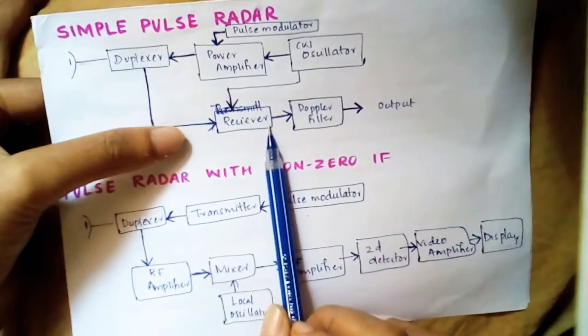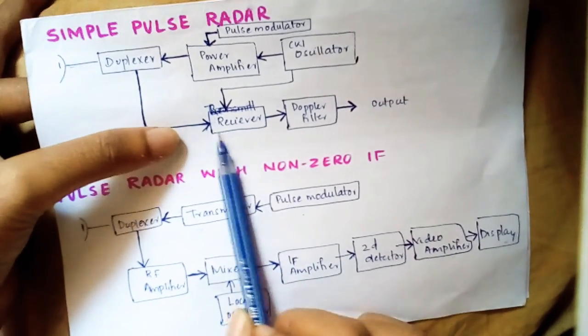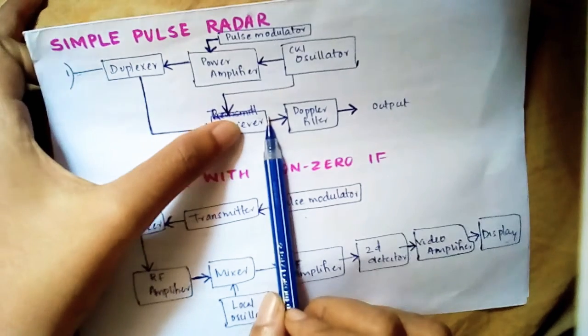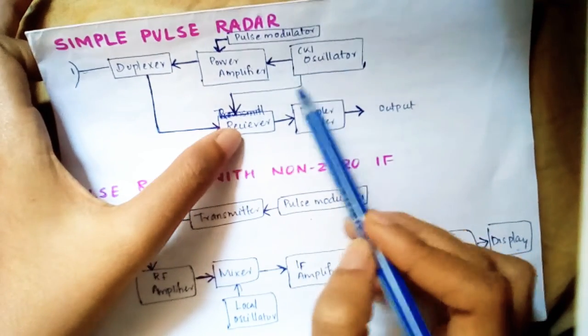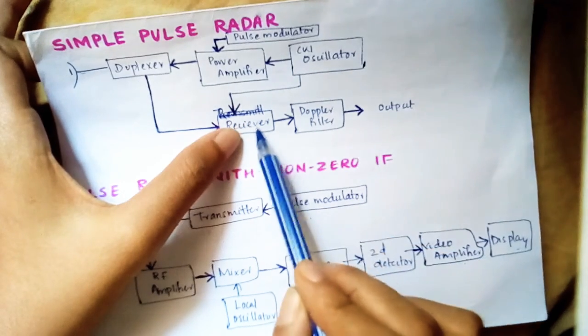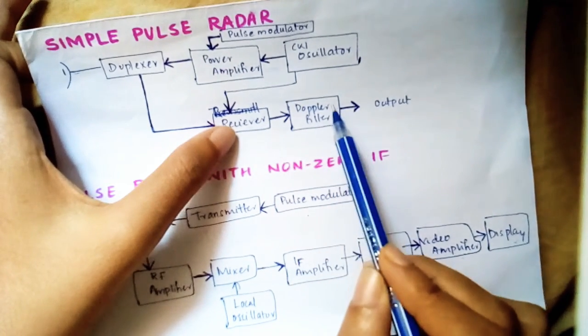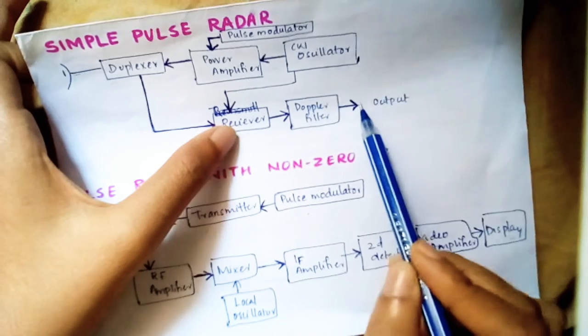Now the receiver section is very simple. We have a receiver block which compares the receiving echo signal with a reference pulse signal, and the change is given to the Doppler filter which is then assigned as the output.